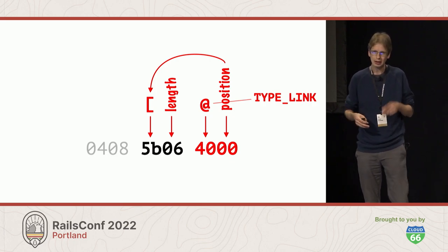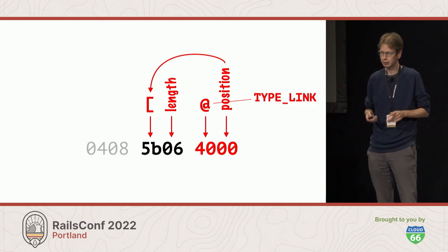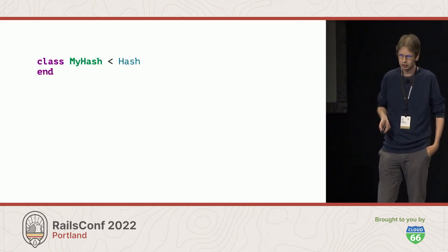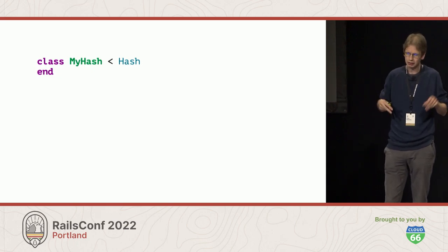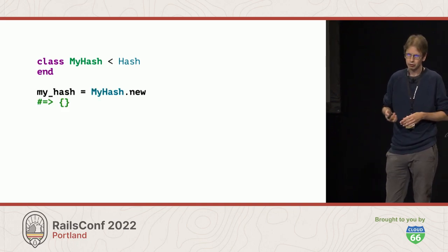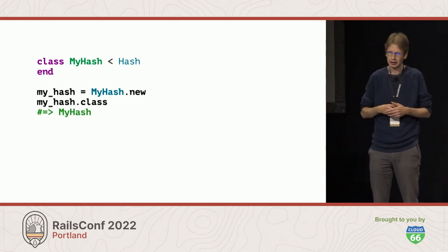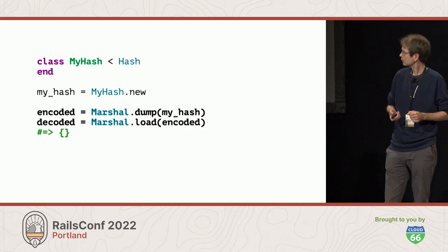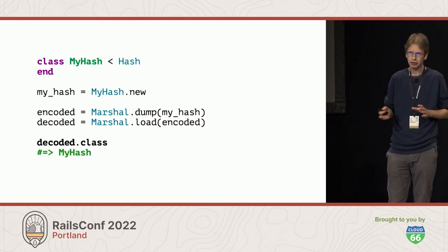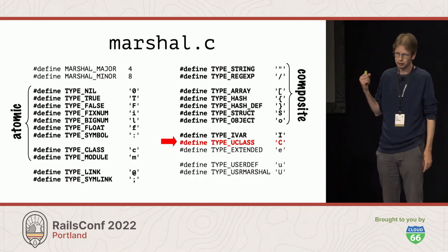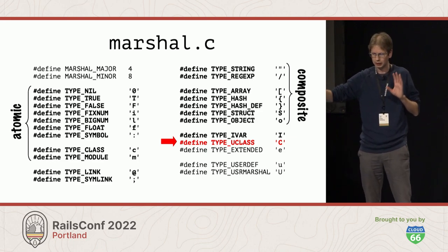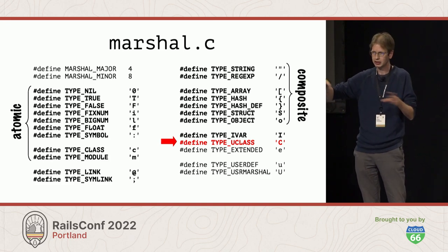Marshall also handles core type subclasses. If you subclass hash and create an instance, it looks like a hash but the class is actually MyHash. Marshall handles this correctly using a special type called uClass, represented by capital C. It wraps these special object types in uClass, which allows it to store the class name along with the data — so it stores MyHash along with the hash data.